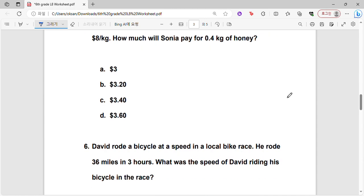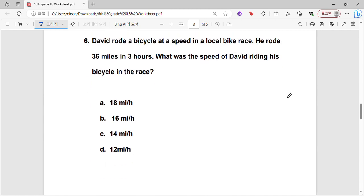Let's skip number 5 and let's do number 6. So David rode a bicycle at a speed in a local bike race. He rode 36 miles in 3 hours. So what was the speed of David riding his bicycle in the race? So 36 miles in 3 hours.